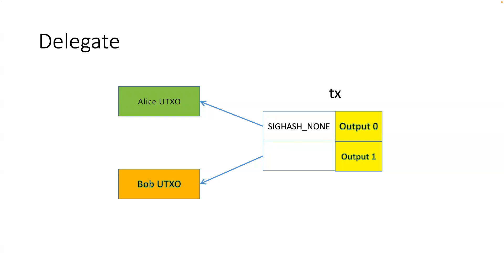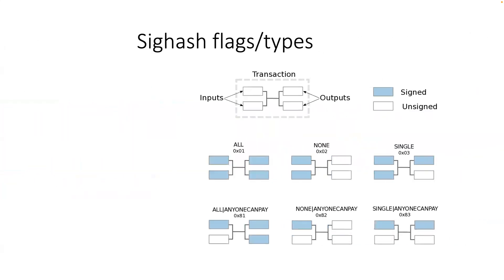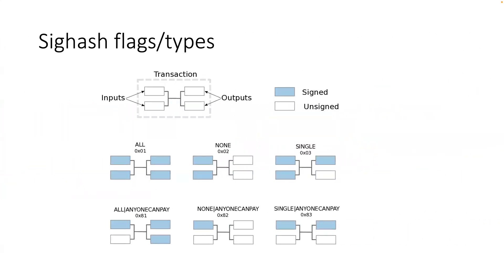Any other questions? I promised I would show the most advanced one: simulating arbitrary sighash flags. We covered three default output flags and six total combinations. But as asked earlier — what if you have three outputs and want to cover only the first two? By default in Bitcoin protocol you can't do that. But thanks to smart contracts, we can.